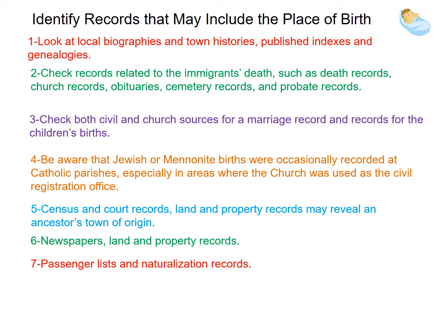Some of the records where you can discover if they were naturalized are census records, court minutes, homestead records, passports, voting registers, and military papers. Check records in all jurisdictions that may have kept records on your ancestor, including town, parish, county, state, and national localities.